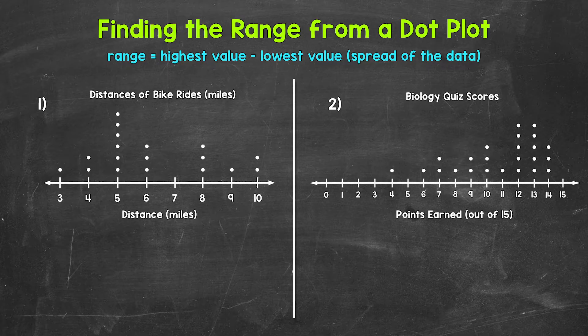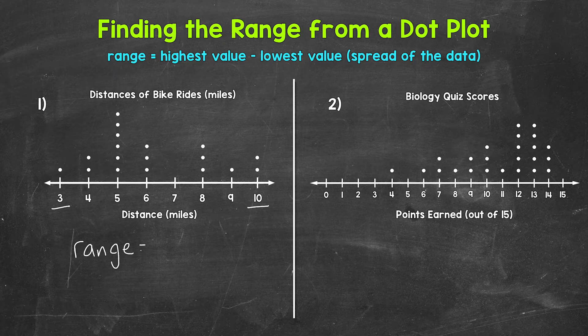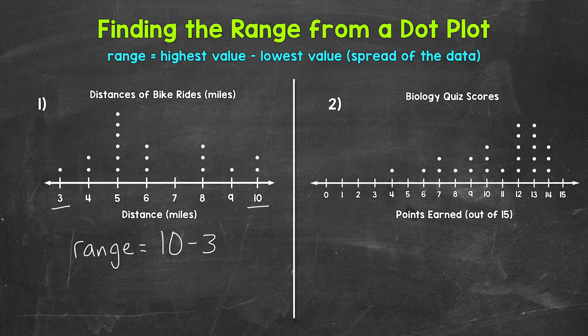We need to take the highest value, so the longest distance, and then subtract the lowest value, so the shortest distance. The highest value is 10 miles. The lowest value is three miles. So for the range, we need to do 10 minus three.